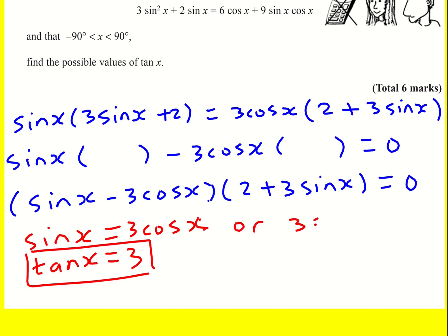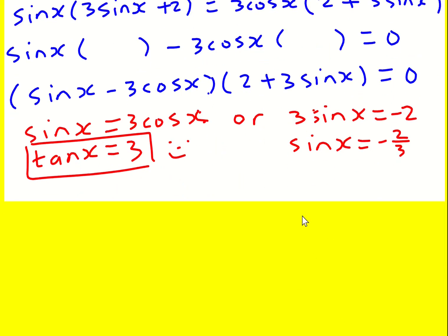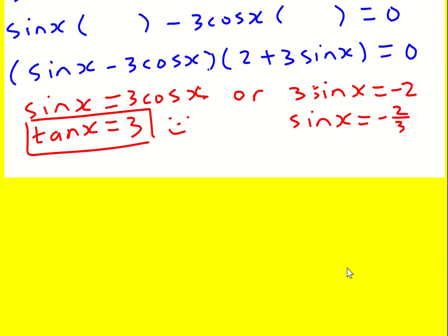Or 3 sin x equals minus 2. So sin x is equal to minus two thirds. Now I've dealt with this bit, this is all good, but I need to find tan x over here. And there's two ways you can do this, I think, using first-year A-level maths. There's actually more ways with second. So I'm going to talk it through two different ways.